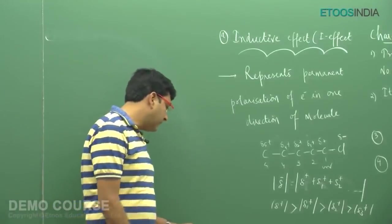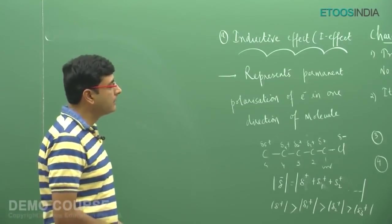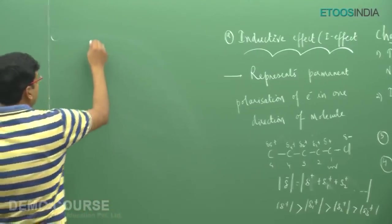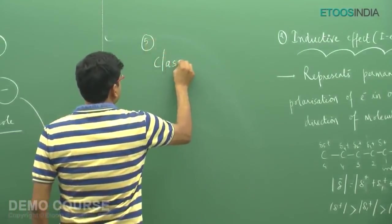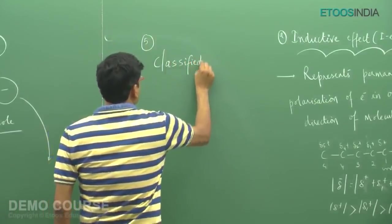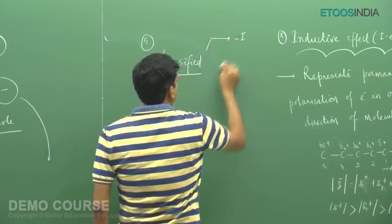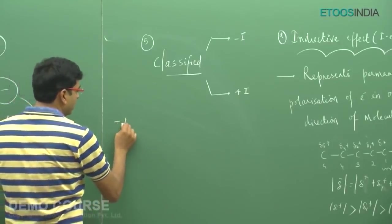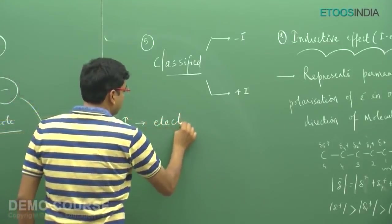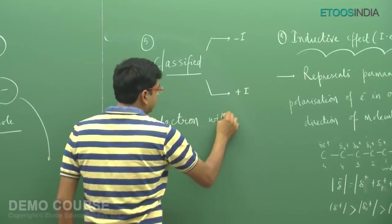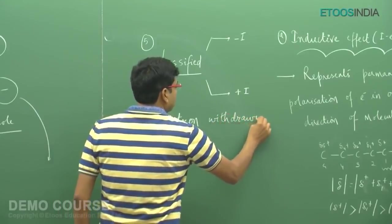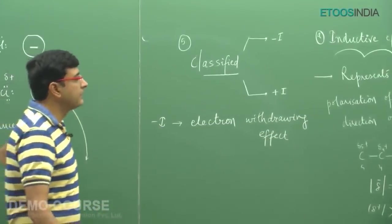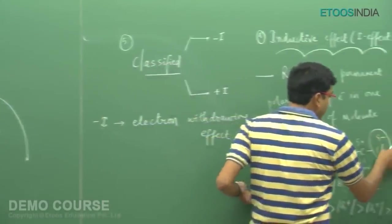To summarize: the inductive effect decreases as distance increases, it is a permanent effect, it is transferred only through sigma bonds with no connection to pi bonds, and it involves partial shifting of electrons — making it a relatively weak effect. Importantly, the inductive effect can be classified into two types: minus I effect, which is an electron-withdrawing effect, and plus I effect. The example discussed — association of a chlorine atom to the main chain — is an example of the minus I effect.